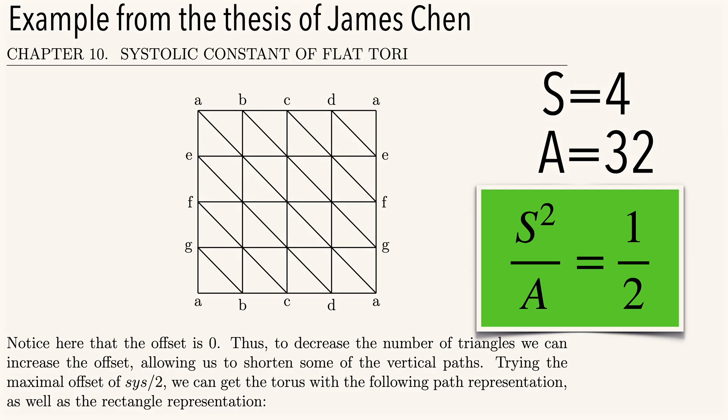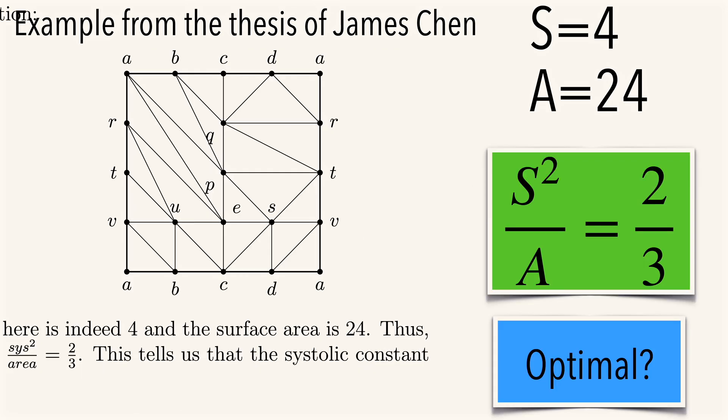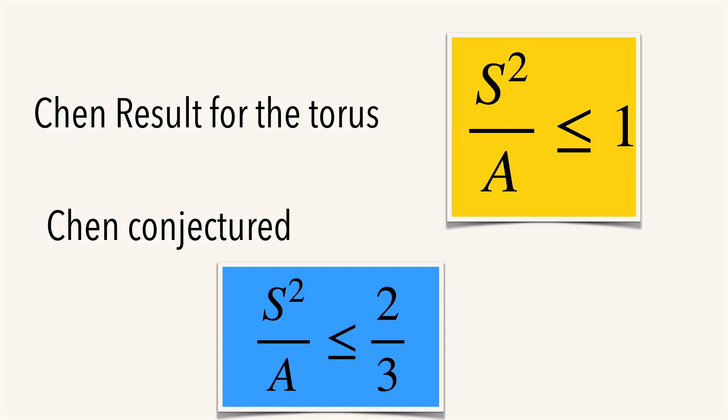Here's an example in the discrete where the ratio is one-half. James found an example with constant 2 over third, and it's likely the optimal case. It's a flat torus in the discrete.